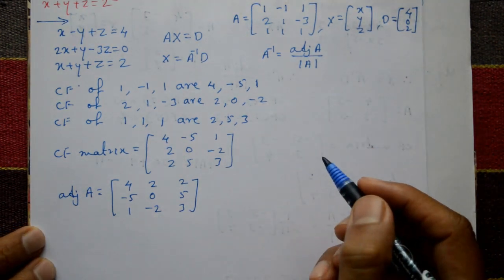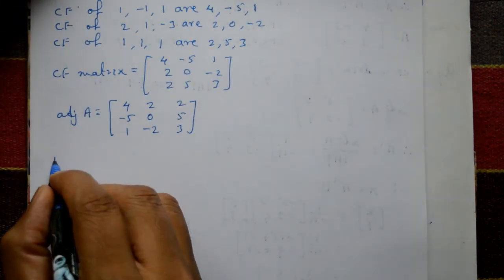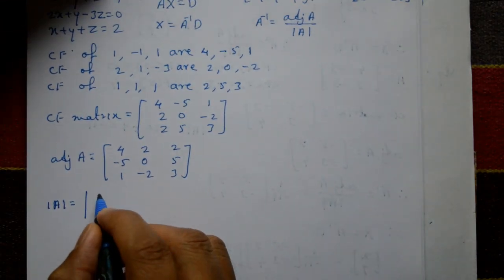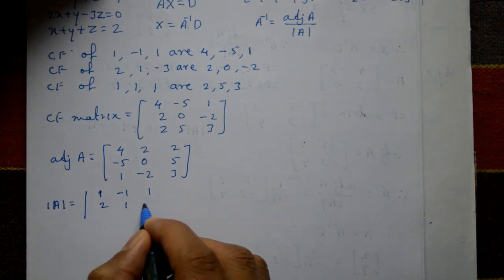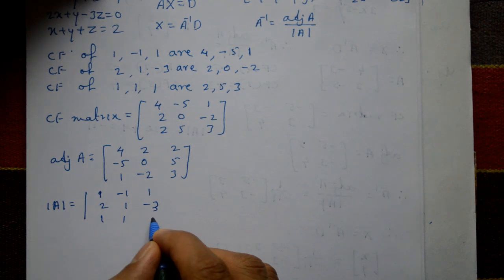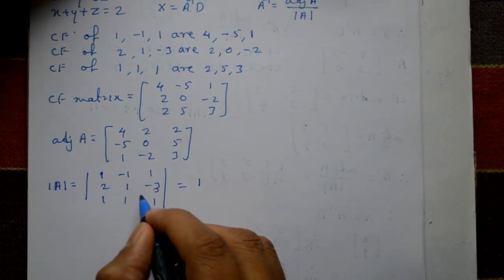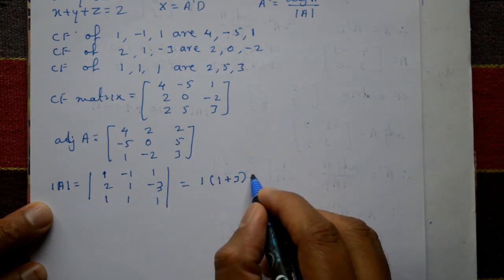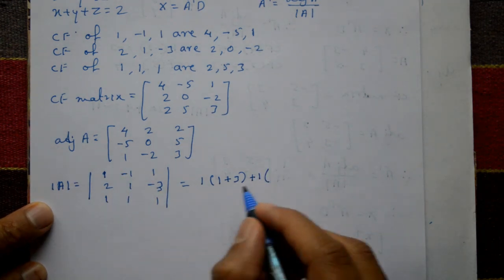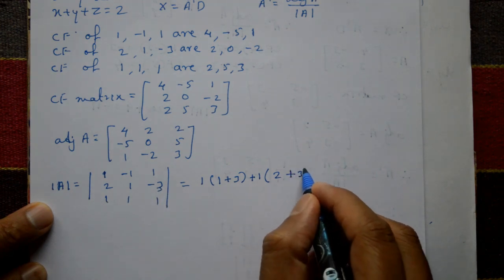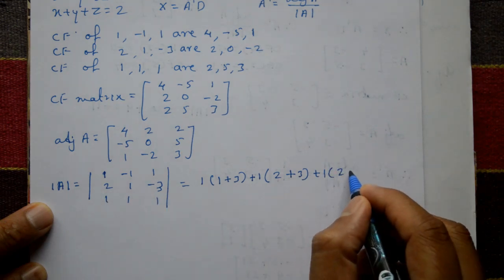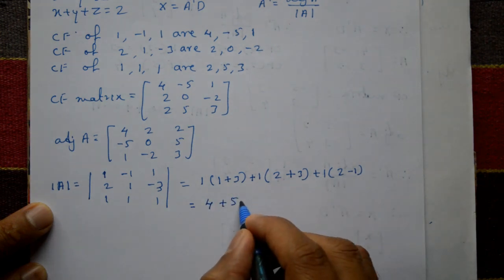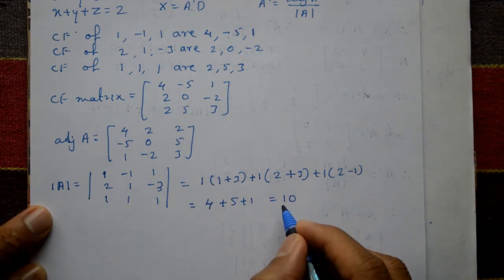Also, the determinant of A is required. Determinant of A equals the determinant of the matrix [1, -1, 1; 2, 1, -3; 1, 1, 1]. Expanding: 1 times (1 plus 3), minus (-1) times (2 minus (-3)), plus 1 times (2 minus 1), which equals 4 plus 5 plus 1, equal to 10. So the determinant of A is 10.